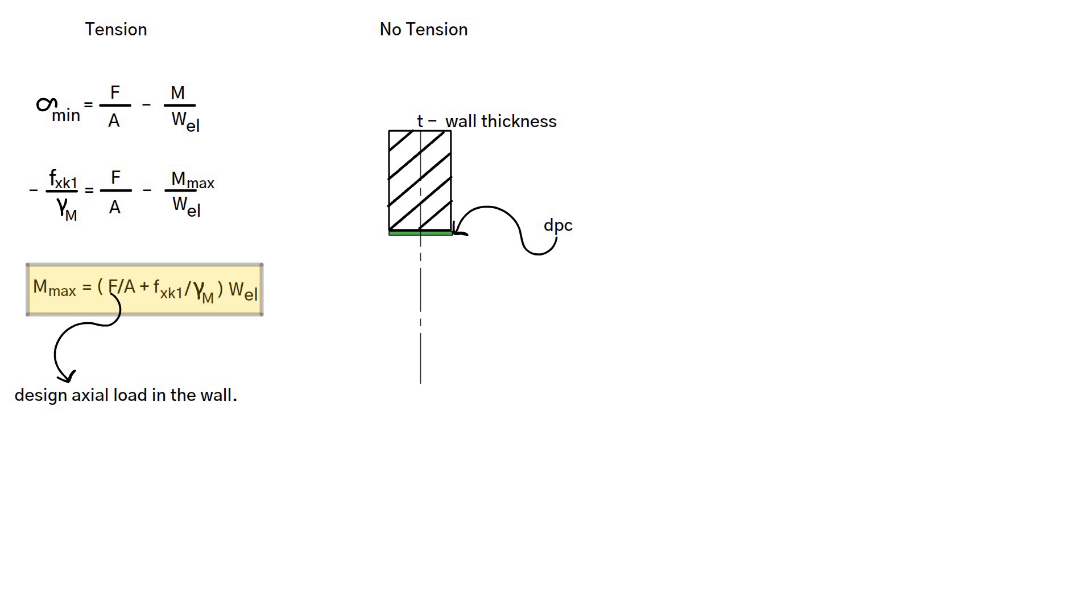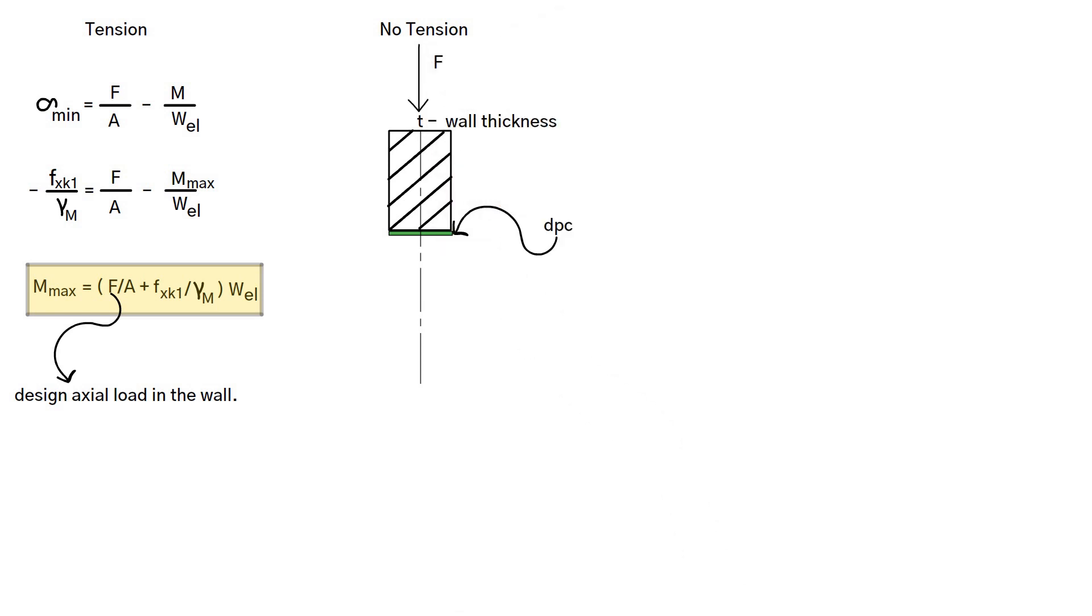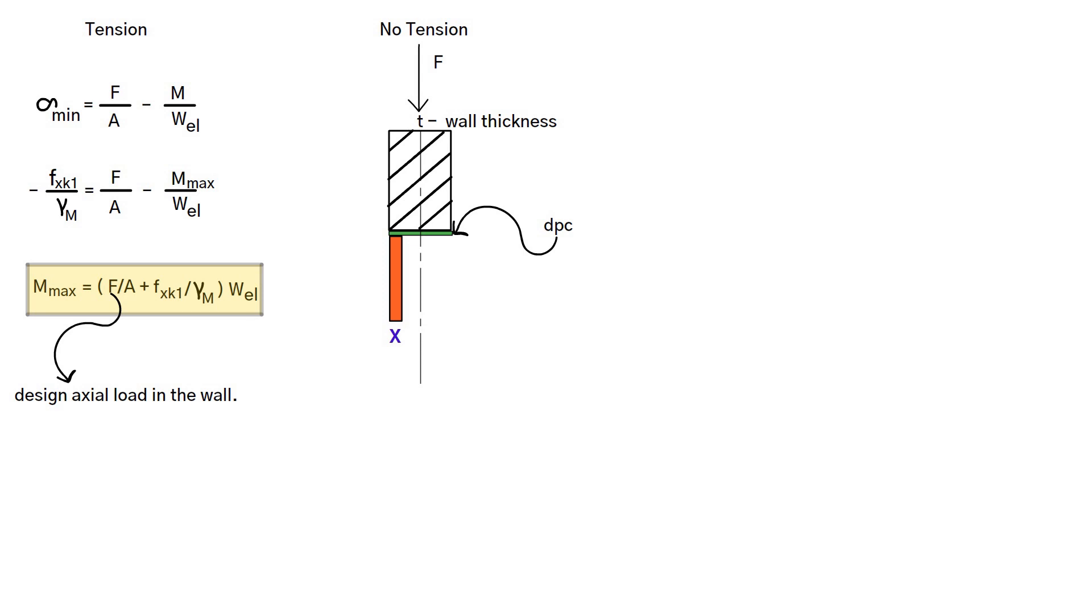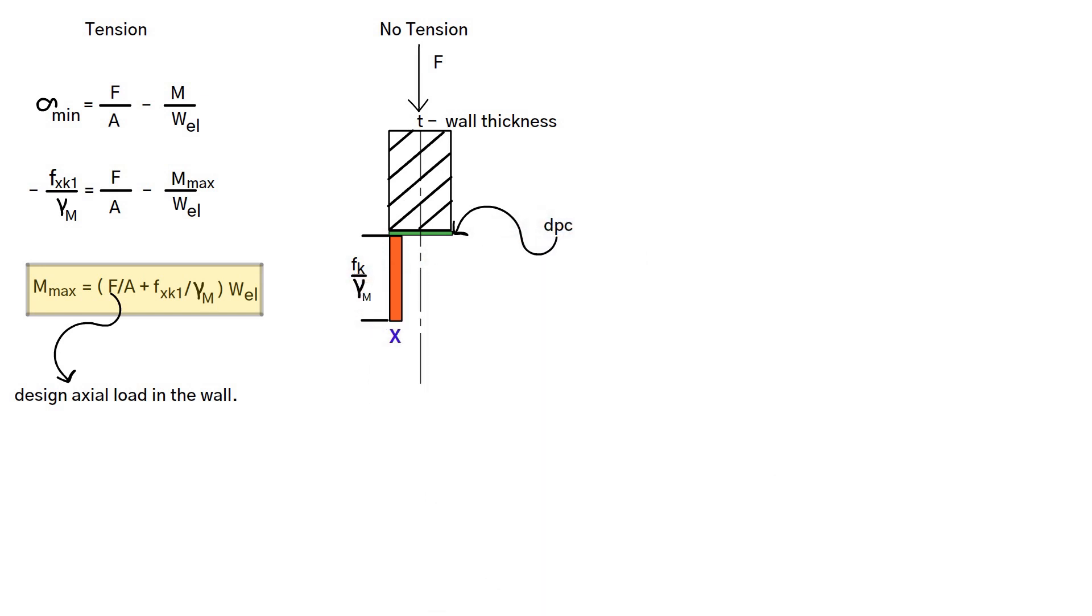As a result, assume that at the ultimate point of failure, the vertical force in the wall, F, is supported by a strip of material of width X which is at its maximum design compressive stress, which is equal to the characteristic compressive strength divided by the partial safety factor for a unit length of wall.